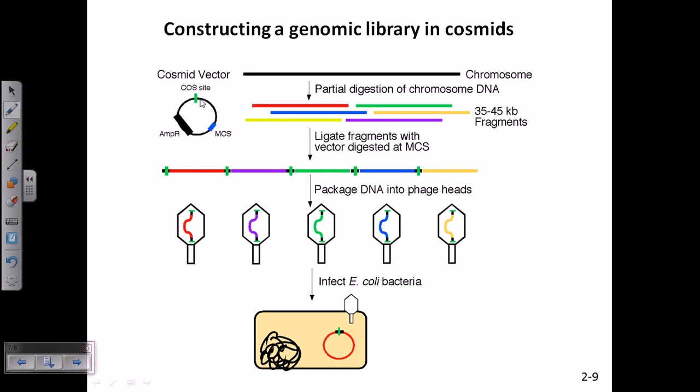Again, it is having the cos sites. But now, this cosmid is having MCS or multiple cloning sites and also it is having an ampicillin resistant region because we need to plate them so that we can screen out our particular desired product. For that, we must have this ampicillin resistant region inside this cosmid.